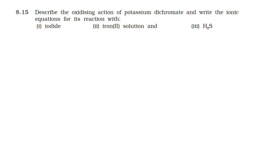NCERT Grade 12, Chapter 8, question number 8.15: Describe the oxidizing action of potassium dichromate and write the ionic equations for its reaction. Potassium dichromate: dichromate is Cr2O7 2-, so Cr in a +6 state.